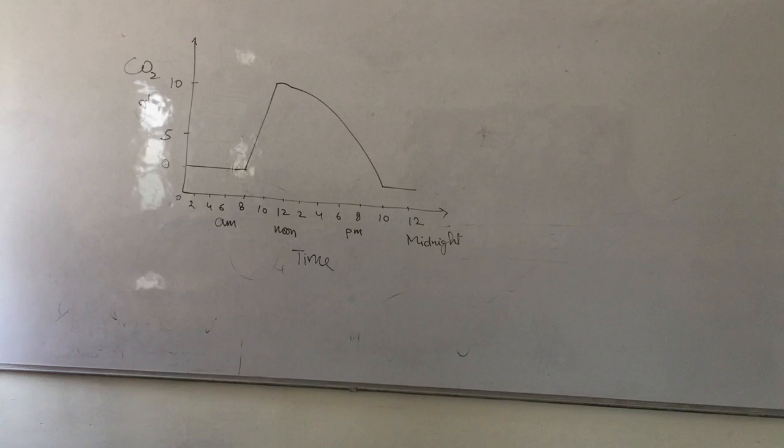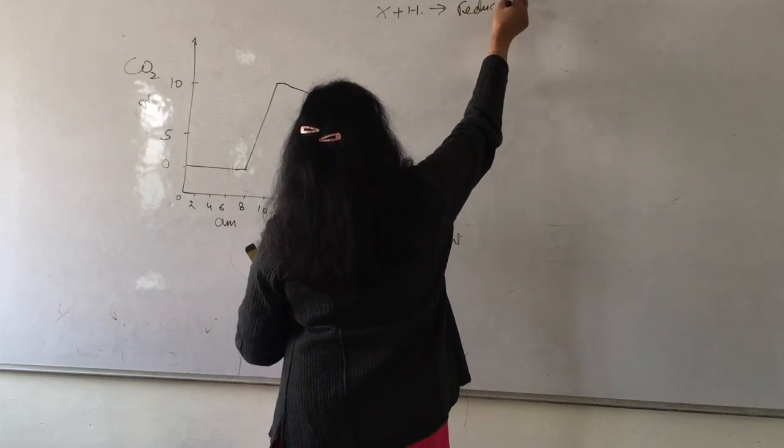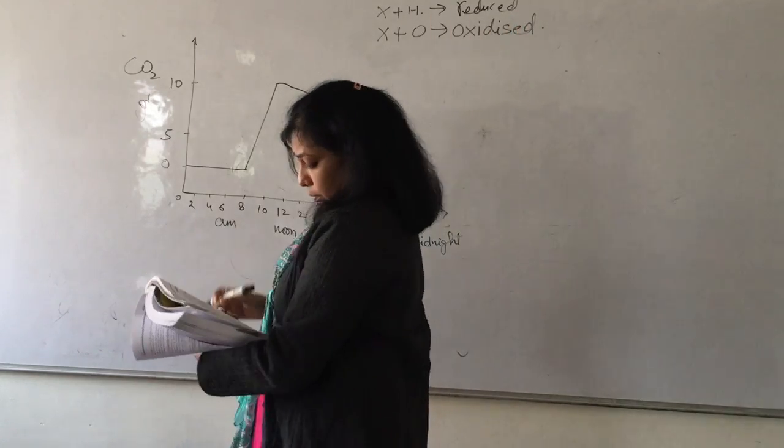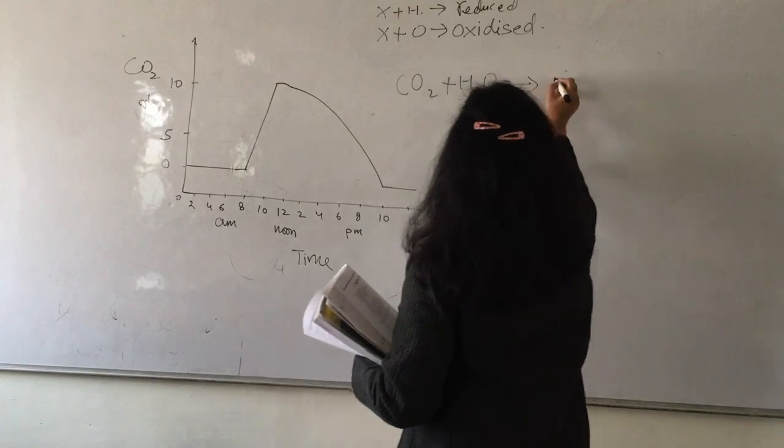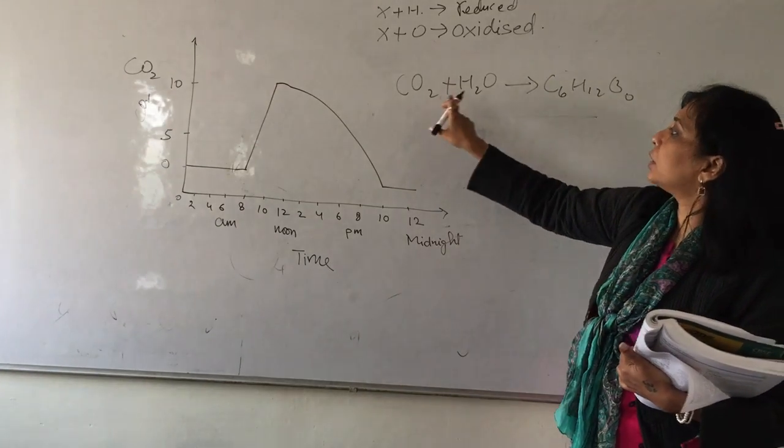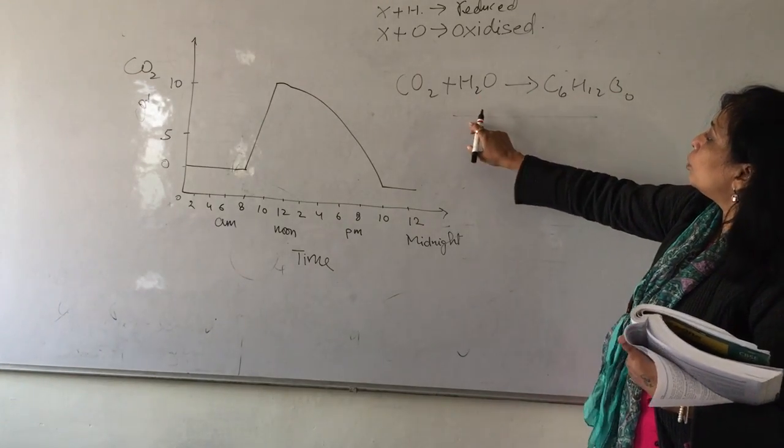How does plant obtain carbon dioxide? Through stomata, very good. And what happens to this carbon dioxide in photosynthesis? Converted into glucose, very good. In the presence of sunlight, a chemical reaction occurs - carbon dioxide is reduced and oxygen is released. This is what is happening during photosynthesis.